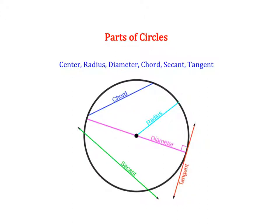Another is called a diameter. A diameter is a line that goes through your center and hits two sides of your circle, but it has to go through your center. A chord is any line that hits two parts of your circle. Any diameter could also be a chord, but a chord does not have to go through the center. A diameter must go through the center.